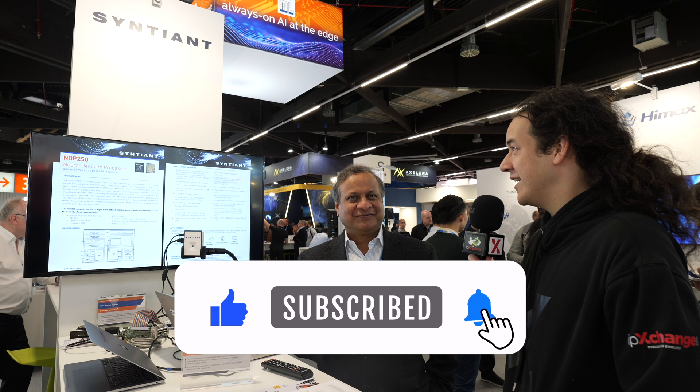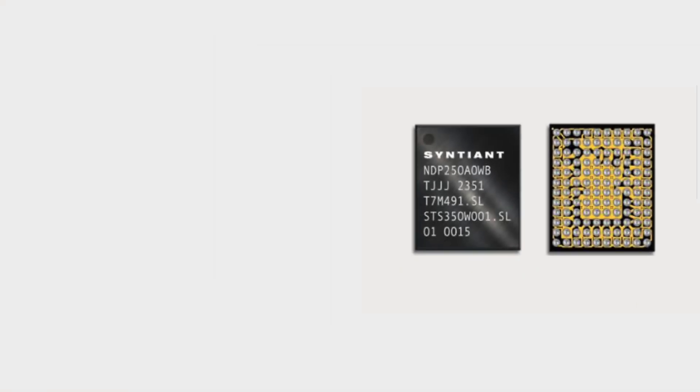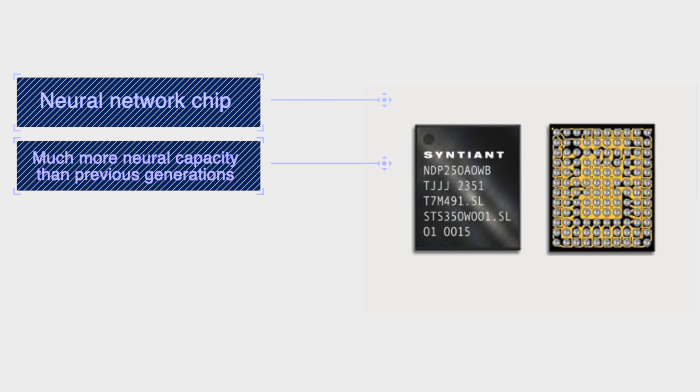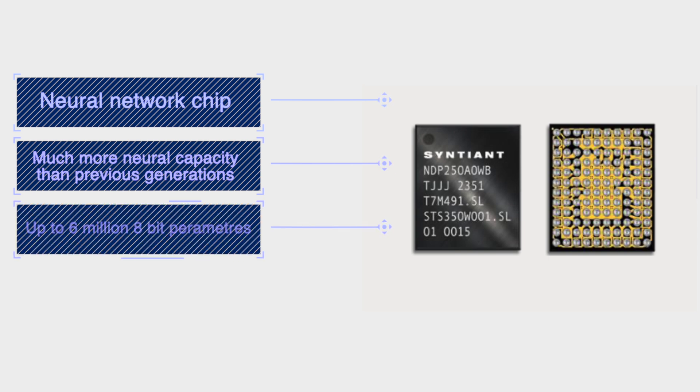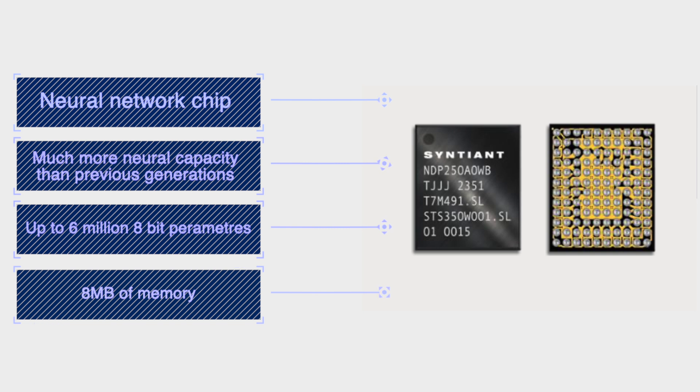So Malik, what's new with the NDP 250? This is our third-generation Sentient Core-based architecture, just launched yesterday at Embedded World. It's a neural network chip, like our Gen 1 and 2, but with much more neural capacity — Gen 1 was about one million 8-bit parameters, and this one goes up to 6 million parameters. We have 8 megabytes of memory on the chip, and the neural core is the Sentient Core 3.